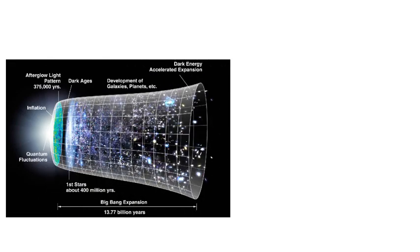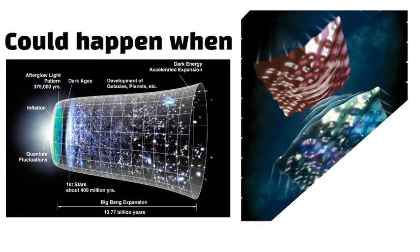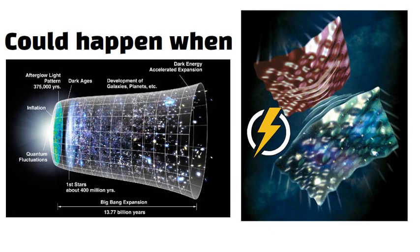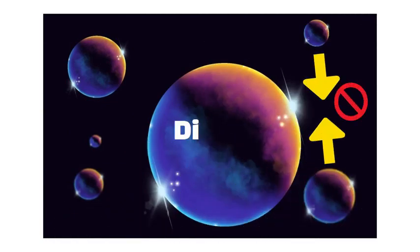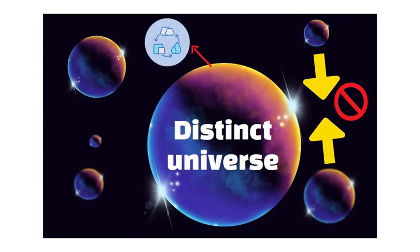One possibility is that a Big Bang-like event could happen when two brains collide, injecting huge energy that looks, from our perspective, like the start of everything. Alternatively, brains might simply float side by side, never touching, yet each forming a distinct universe with its own matter and forces.